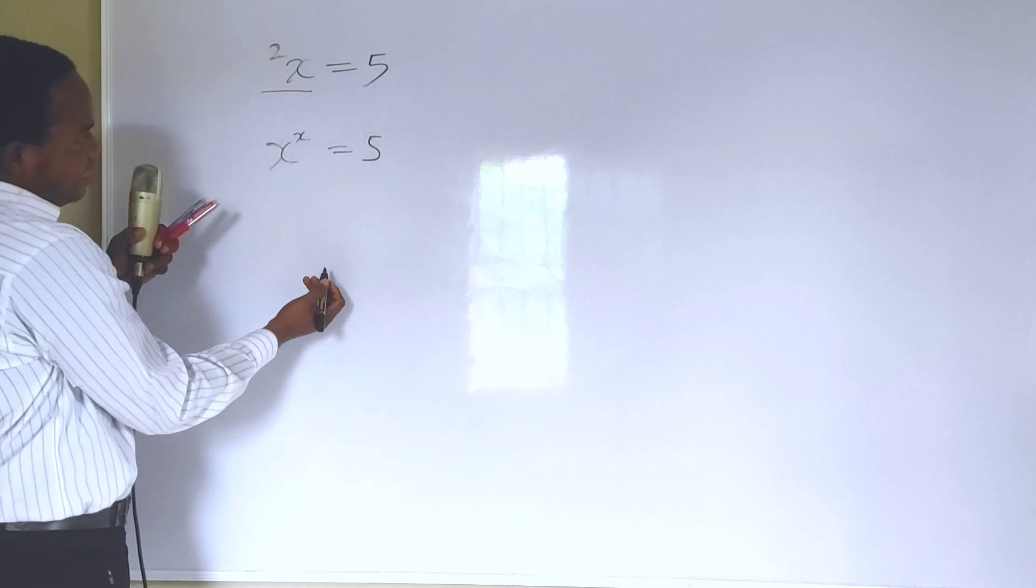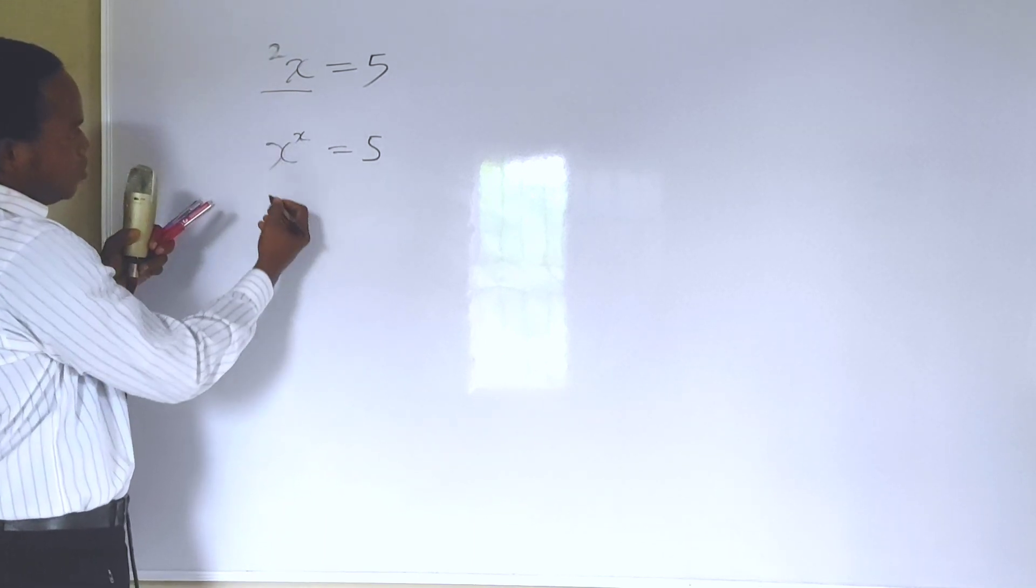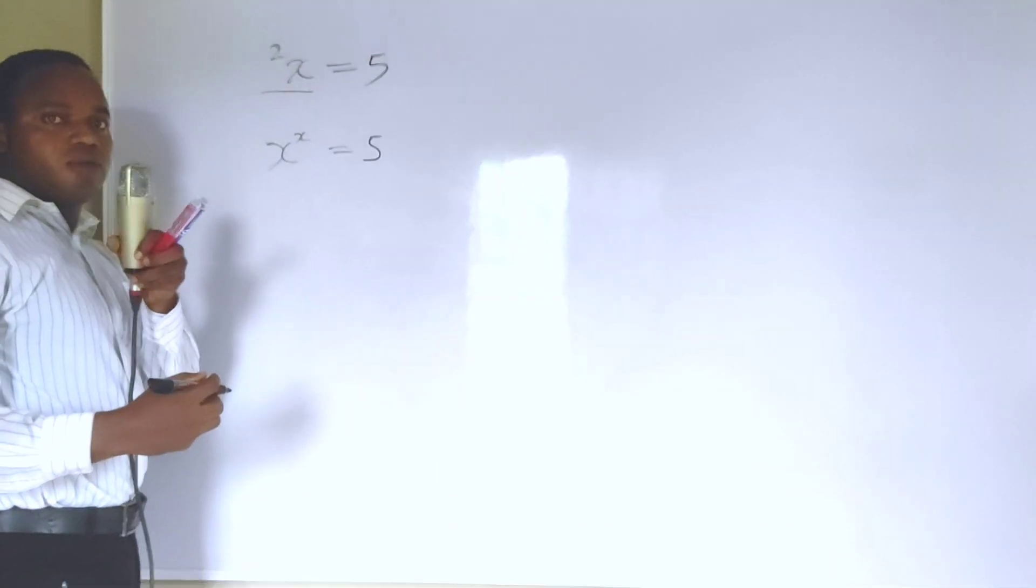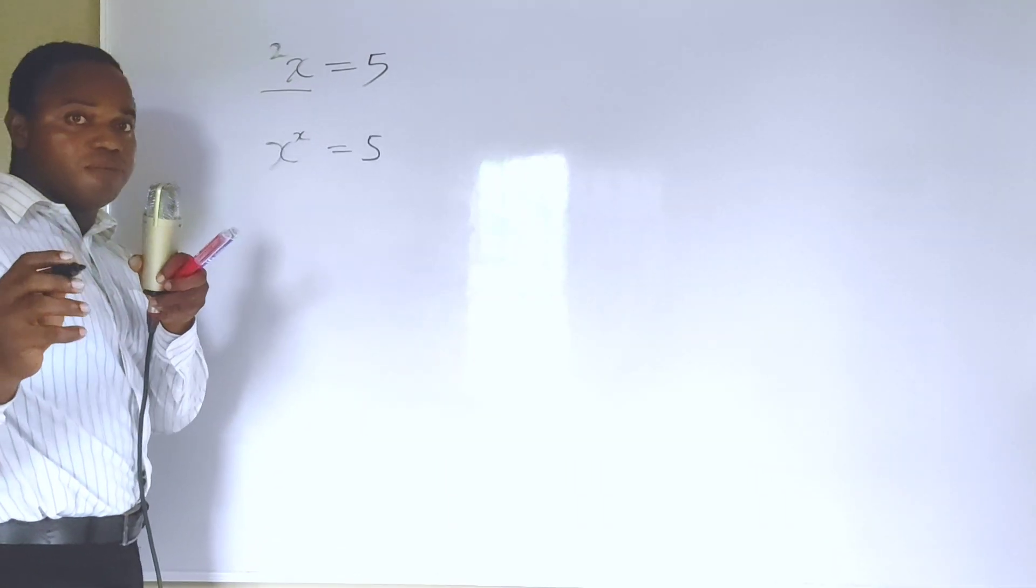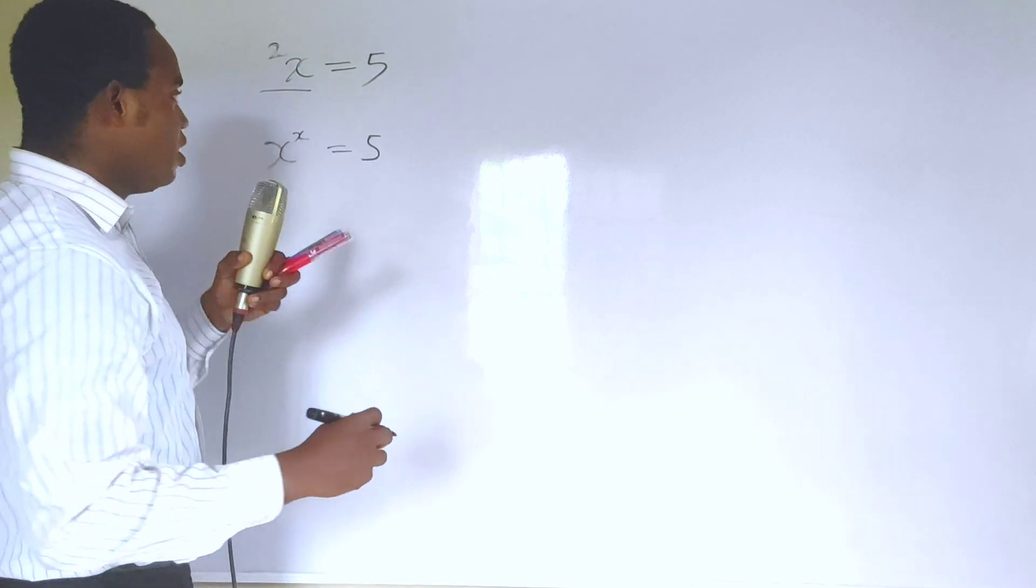The first thing you do in cases like this is it's reasonable to introduce the natural log to both sides. That does not solve the problem completely, but in a little bit, you're going to see the reason why we are doing that.